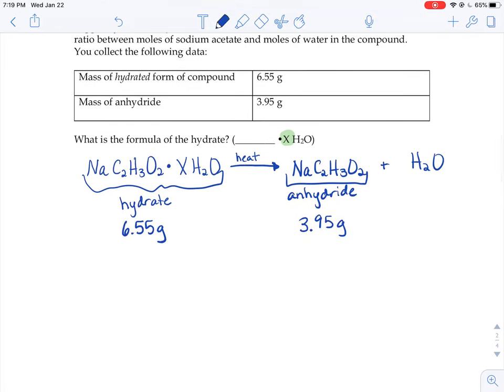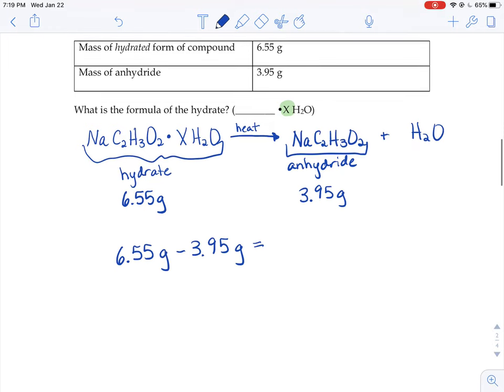Due to the law of conservation of matter and the law of conservation of mass, if the whole thing started with a mass of 6.55 grams and the sodium acetate part of that weighs 3.95 grams, that must mean that 2.60 grams worth of water must have evaporated away. So we know the mass of this part.